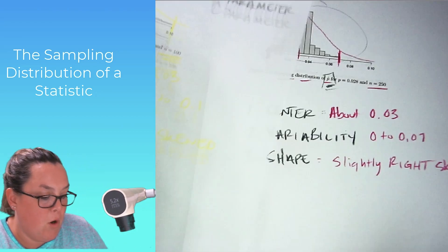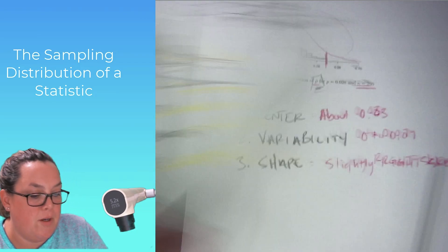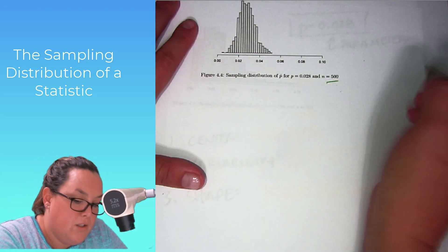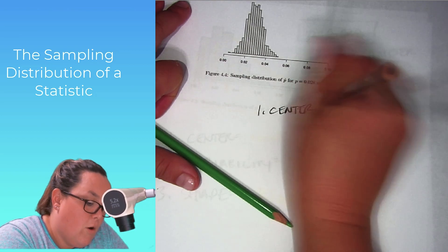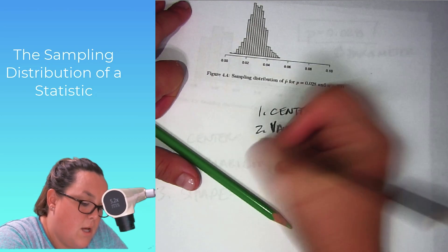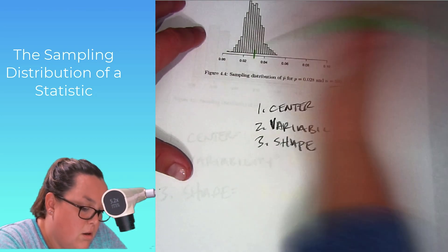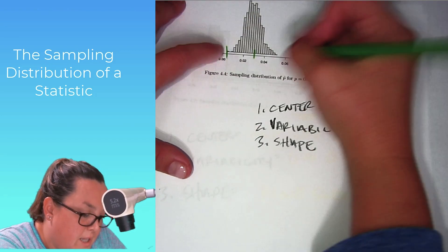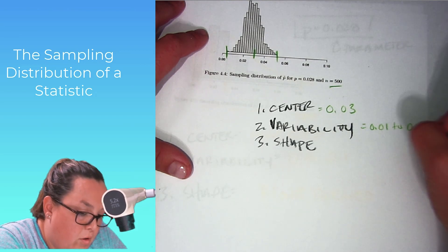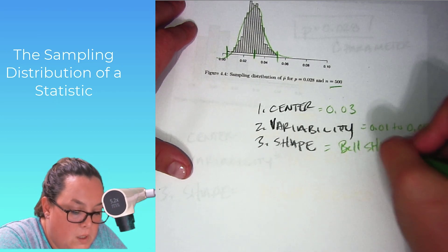So going from sample sizes of 100 to 250, we can see those changes. Next, this one jumps up all the way to 500. We're still interested in the center, variability, and shape. The center appears to be at 0.03. Variability looks like it goes from about 0.01 to about 0.05. And the shape — let's say bell-shaped.